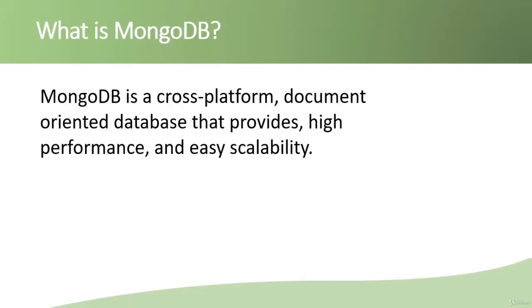MongoDB is a cross-platform document-oriented database that provides high performance and easy scalability. Cross-platform means we can use MongoDB on every operating system. It is document-oriented, which is pretty much like JSON. MongoDB is very fast and highly scalable, and that is the reason we use MongoDB with Node.js.